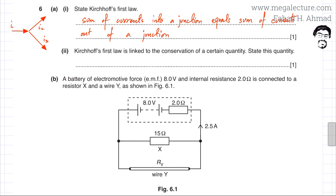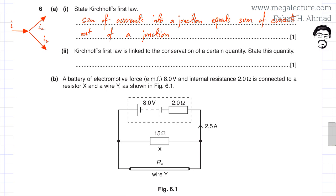This basically means that if there is a node where three wires are connecting to that particular node, and there is current flowing into the node and there are two currents flowing out of the node, then the sum of currents going into this junction, which is I1, should be equal to the sum of currents coming out — meaning I1 equals I2 plus I3.